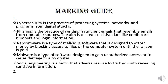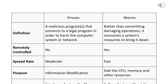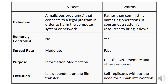Number two: Comparison between viruses and worms. Key elements for comparison — Definition. A computer virus is a malicious program that attaches to a legitimate program in order to harm the computer system or network. Computer viruses attach to programs, and when those programs are executed by the CPU, the virus also executes and harms other components of the computer.